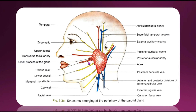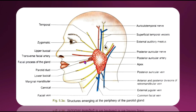The parotid duct, also called Stenson's duct, is thick-walled and about 5 cm long. It emerges from the middle of the anterior border of the parotid gland and runs forwards and slightly downwards on the masseter muscle. Superiorly it is related to the accessory parotid gland, transverse facial vessels, and upper buccal branch of the facial nerve. Inferiorly it is related to the lower buccal branch of the facial nerve. At the anterior border of the masseter, the duct turns medially and pierces the buccal pad of fat, buccopharyngeal fascia, and buccinator muscle. Due to its oblique course through the buccinator, inflation of the duct is prevented during blowing. It opens into the vestibule of the mouth opposite the crown of the upper second molar tooth.